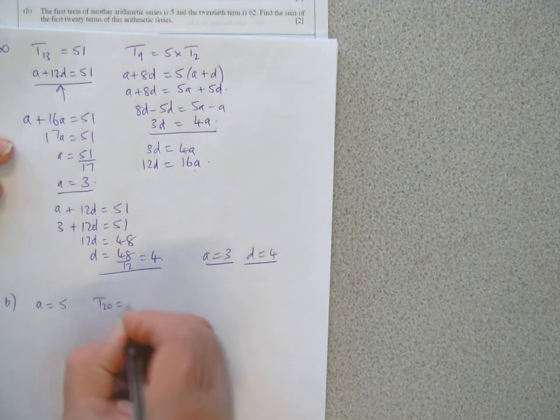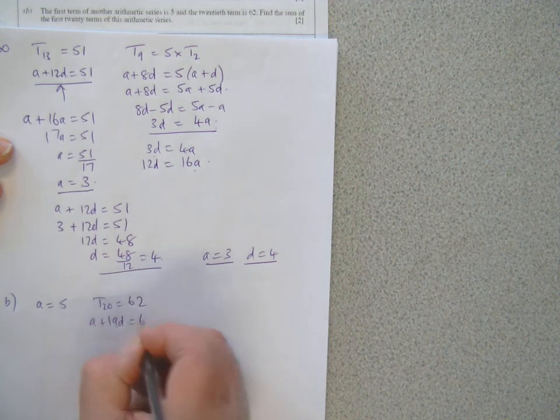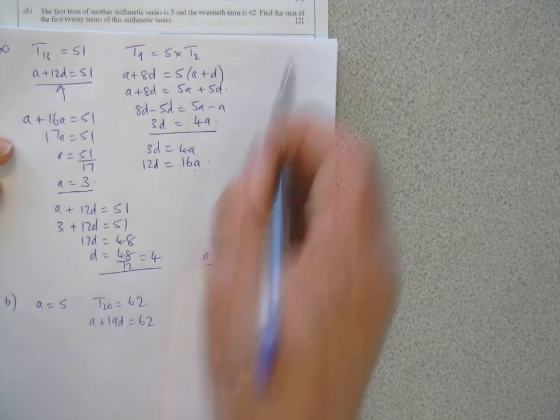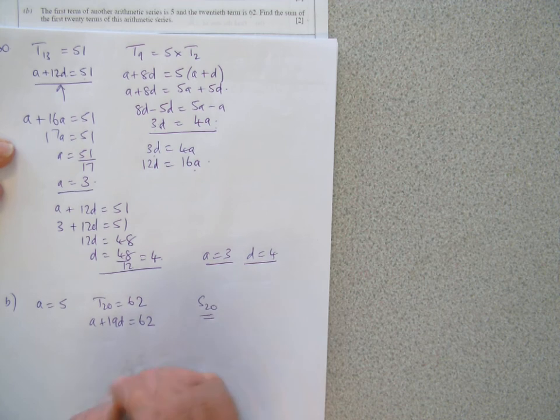So T20 is 62, so A plus 19D is 62, and I want to find the sum of the first 20 terms. I want to find S20.